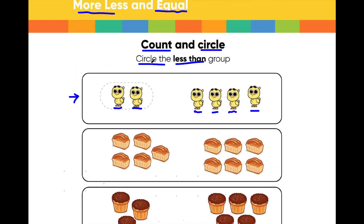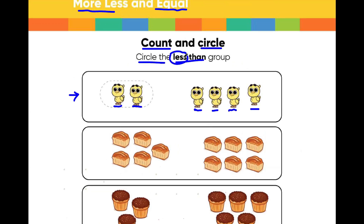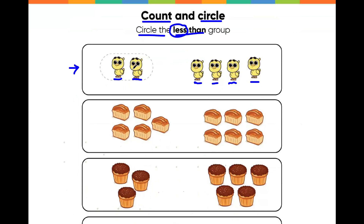And you must be wondering why only this group is circled. Because in the question it says that we have to circle the less than group — that means we have to circle the group that contains fewer objects. For example, this group contains only two ducklings while this group contains four ducklings, and we would circle the group that contains less number of objects.